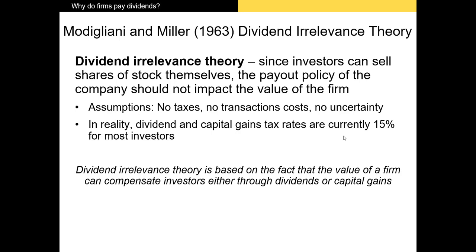The first and oldest theory is the dividend irrelevance theory of Modigliani and Miller. Miller won the Nobel Prize for capital structure irrelevance, while Modigliani won the Nobel Prize for dividend irrelevance. The dividend irrelevance theory works like this: since a firm can either issue a dividend now or invest it and offer shareholders capital gains in the future, whether the firm has a dividend or not should be irrelevant to investors. The implication is that the share price shouldn't change when dividends are announced or cut — but in reality, that is not the case.